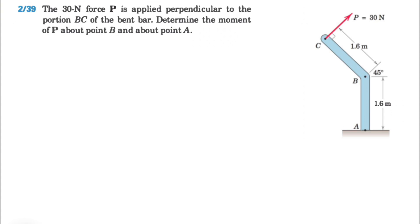Alright, welcome back guys. We're going to be solving question 39 from the second chapter of the Merriam textbook. We have a 30N force P that is applied perpendicular to the portion BC of the bent bar. We need to determine the moment of P about point B and point A.